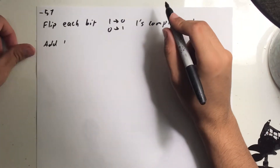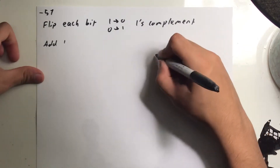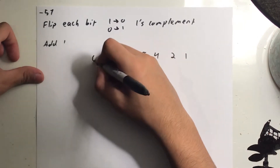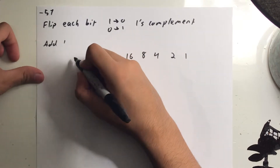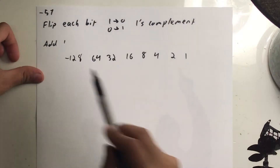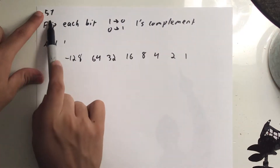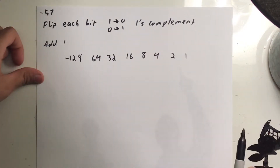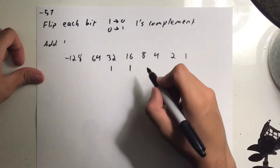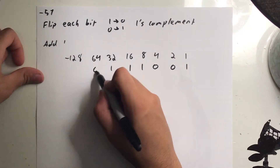For negative 57, first get the positive number: positive 57. Writing the powers of 2 — 1, 2, 4, 8, 16, 32, 64, negative 128 — to get 57: 32 and 16 make 48, plus 8 gives 56, plus 1 gives 57. The remaining bits are filled with zeros.